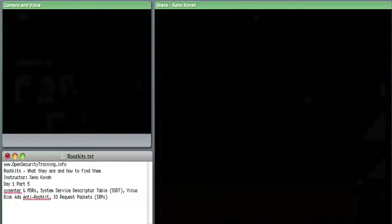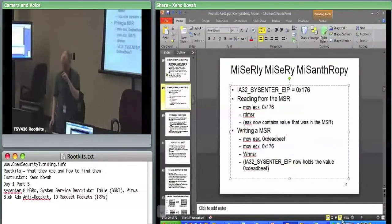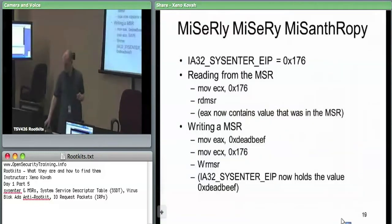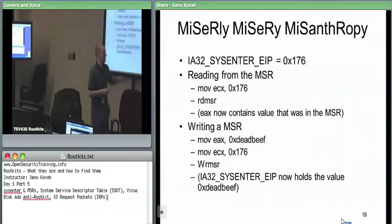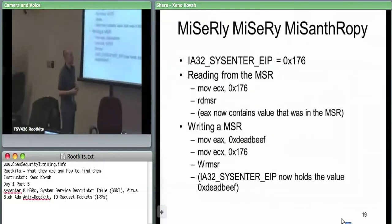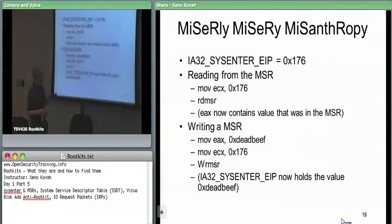MSRs are on the CPU so they're quick access. They can be used for specific capabilities. Something like GMER or Toluca would check whether the sysenter EIP is pointing at KI fast system call. It should always be pointing at that one particular thing in kernel space.